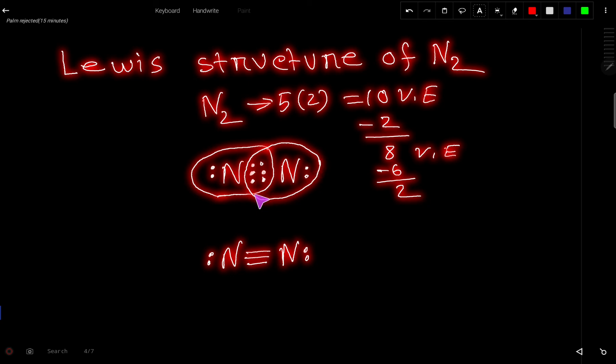So we can say that this is the Lewis dot structure of N2. We can express this bond pair as dashes. So 3 bond pairs, 3 dashes. So the Lewis dot structure of N2 is this.